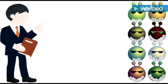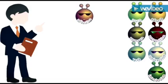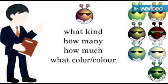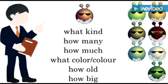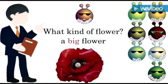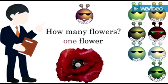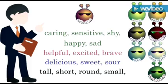Now Adjective, it's your turn! Hello, I'm Adjective. An adjective is a word that describes a noun. It tells about what kind, how many, how much, what color, how old, how big, etc. For example: a big flower — big is an adjective describing the noun flower. A red flower — red is an adjective. One flower — one is an adjective telling us how many. We'll learn more about adjectives in another video.